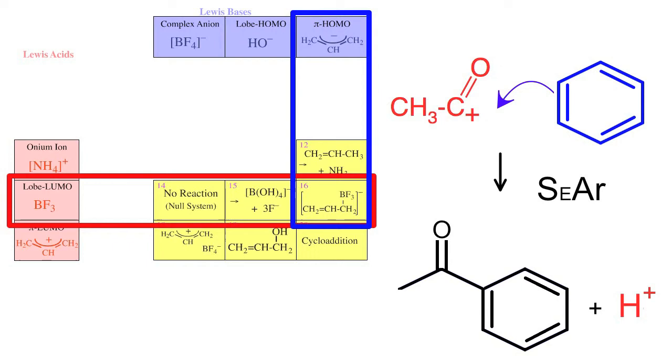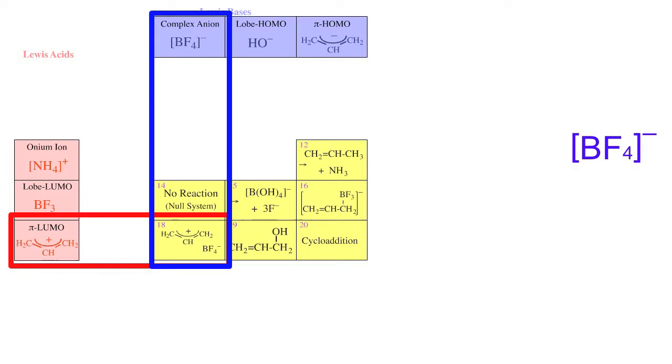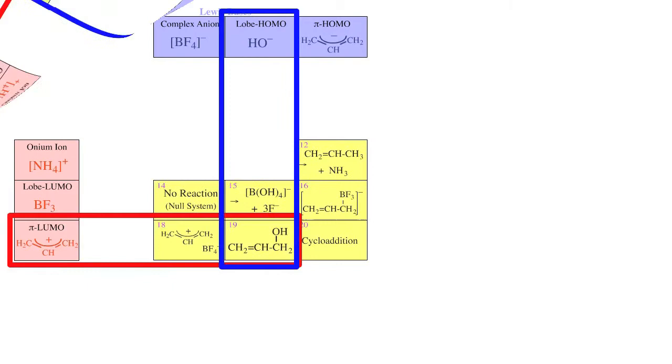Complex anion Lewis bases are very non-nucleophilic and can act as counter ions to highly reactive pi LUMO Lewis acids such as the allyl cation and the tropylium ion.